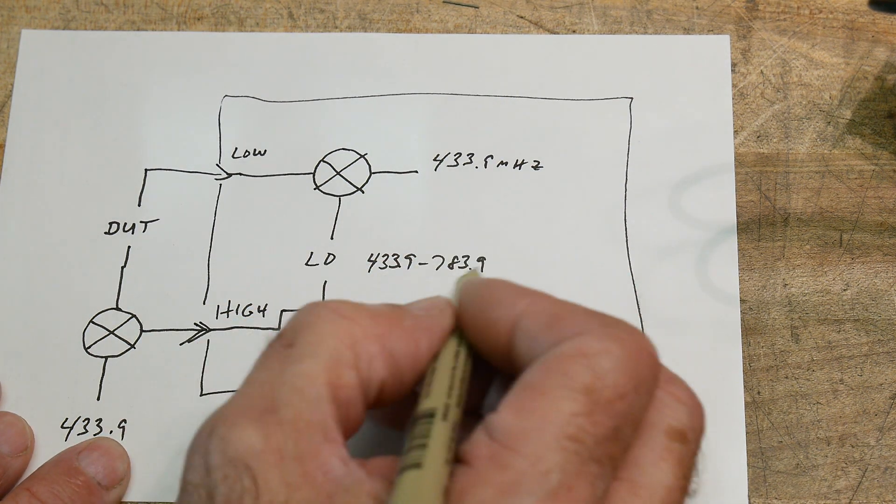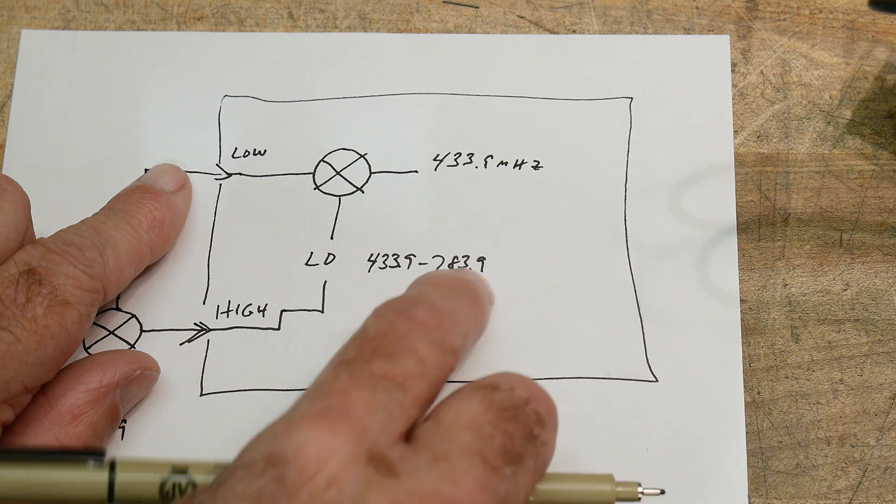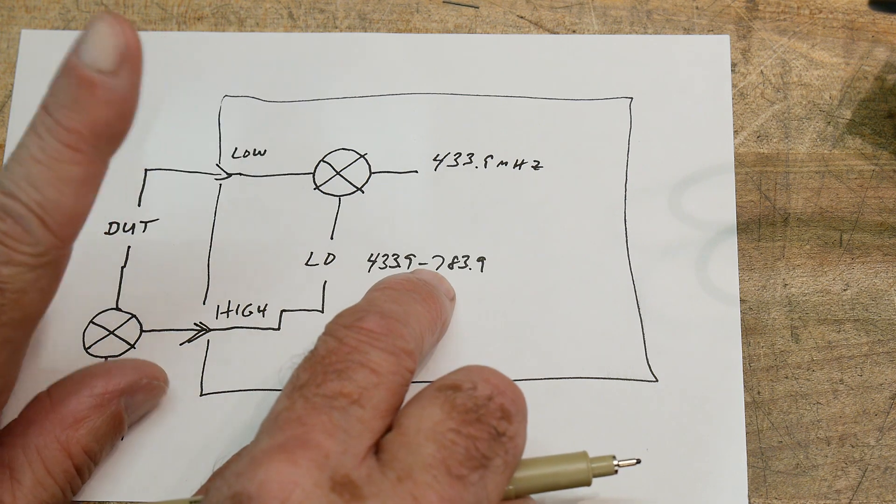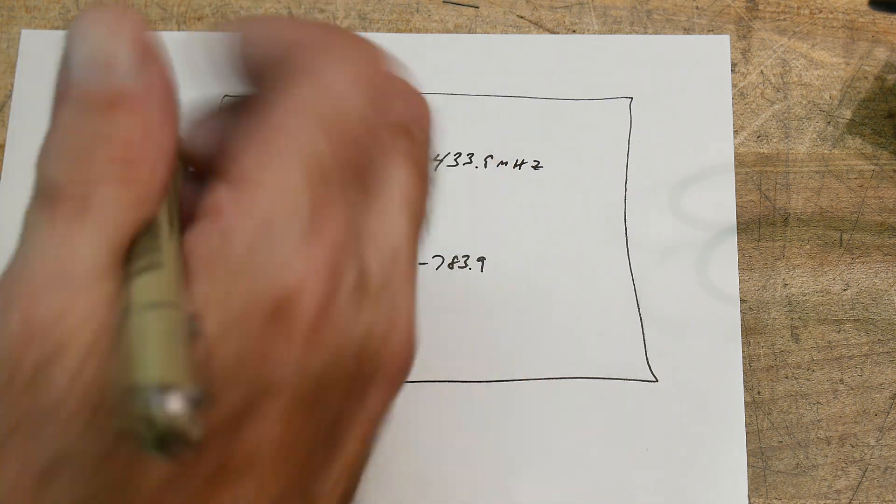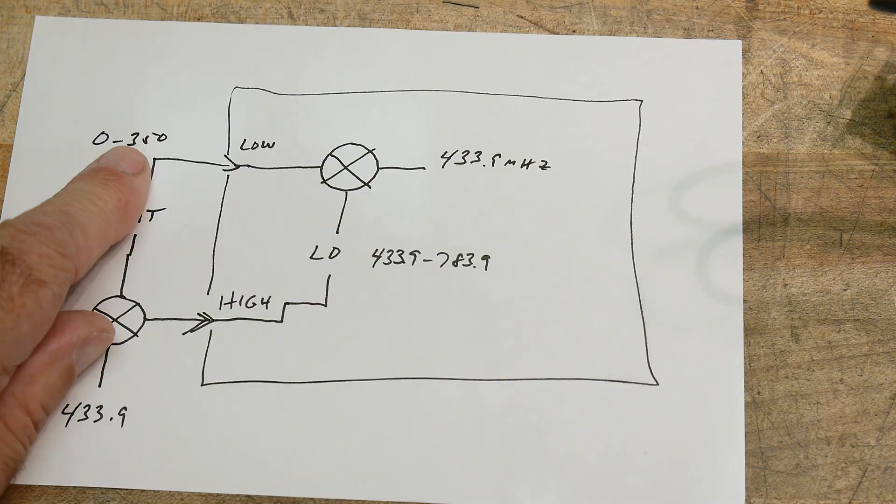And the LO is going to sweep something higher. So it's going to take the incoming signals and subtract them from these signals. So these minus these equals that. So this goes between 0 and 350 megahertz.